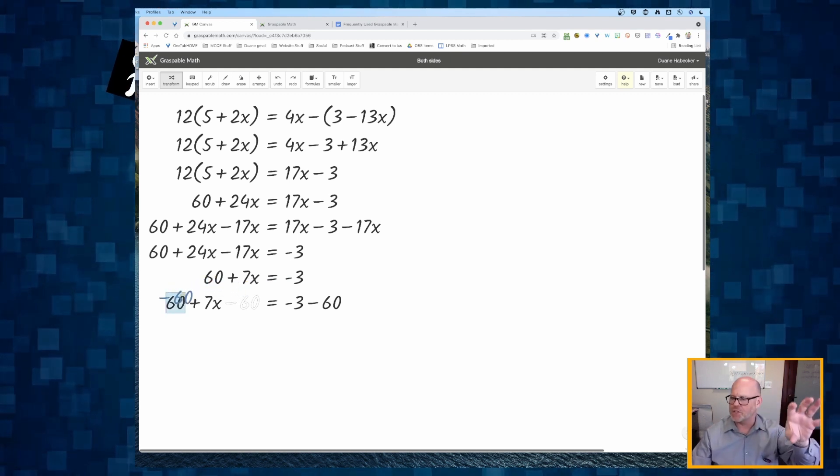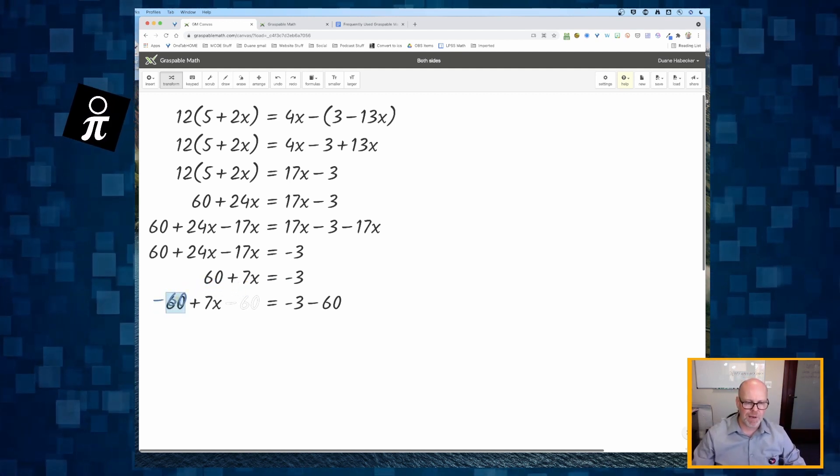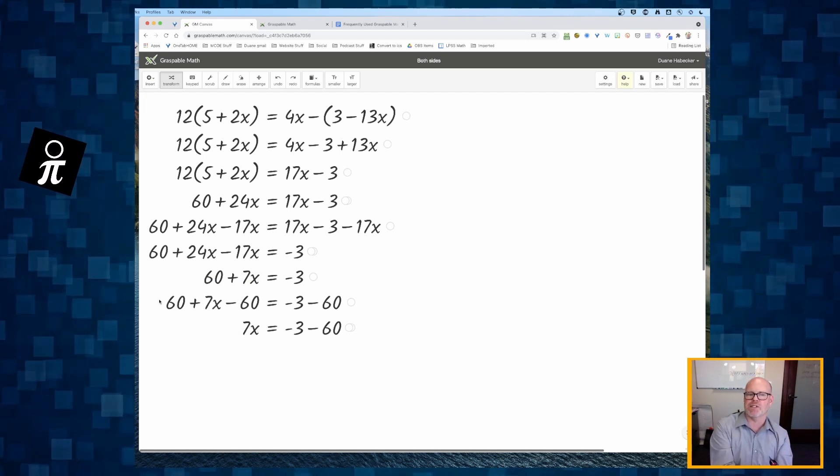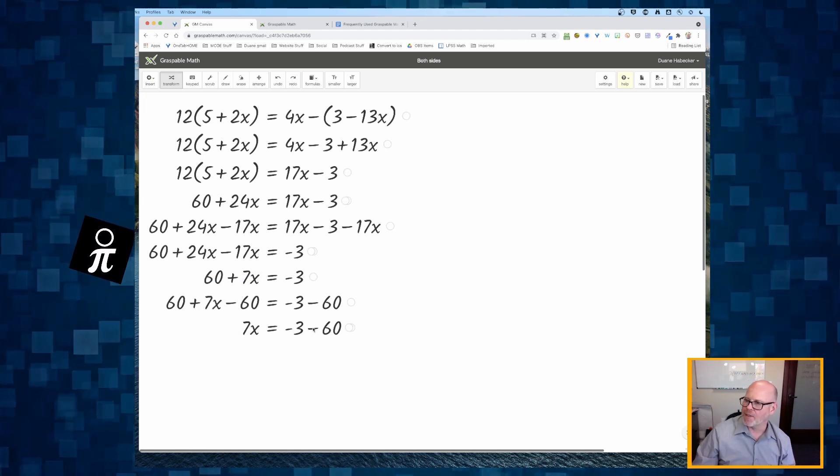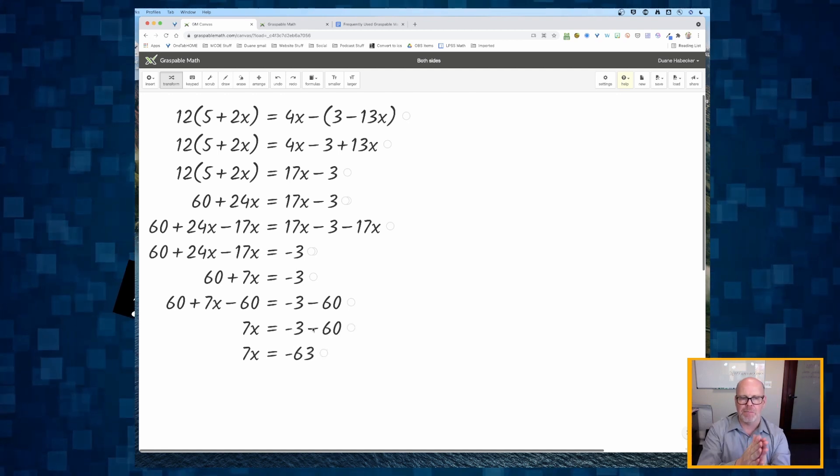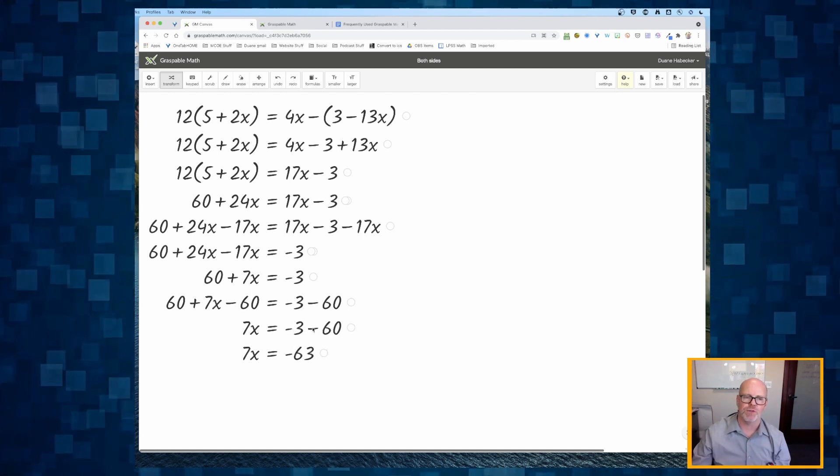And there's my more traditional minus 60 from both sides. I can click and hold on that minus 60 on the left side of the equation and put it on top of the positive 60. It makes the 60s go away. And on the right side, I can just click on that minus sign and it combines the minus 3 minus 60 and gives me negative 63.